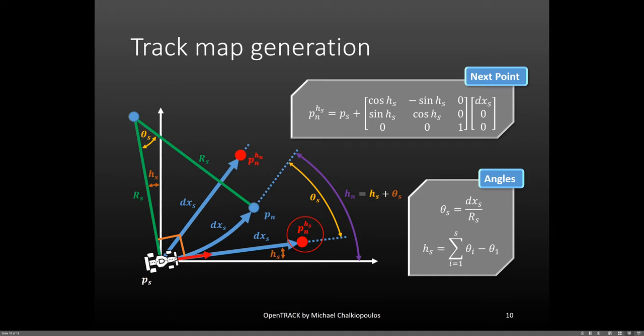It takes the coordinate of the point PS and adds a vector that has the circular segment length value in its X component and is rotated by the heading angle at point PS. One thing to keep in mind is that the heading angle is 0 at the start of the lap, plus 360 degrees at the end of a counterclockwise closed circuit, minus 360 degrees at the end of a clockwise closed circuit, zero at the end of a closed figure 8 circuit like Suzuka.